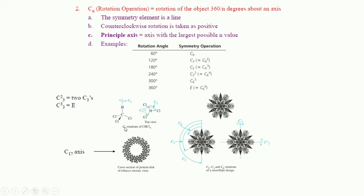Here are examples of some rotation operations. We can see a C3 axis present in this molecule. There is also another C3 example — this is the cross-section of the protein disc of tobacco mosaic virus. We can see that there are 17 faces of this protein disc, so we need to perform a C17 axis of rotation. To find the rotation angle, we simply divide 360° by 17.